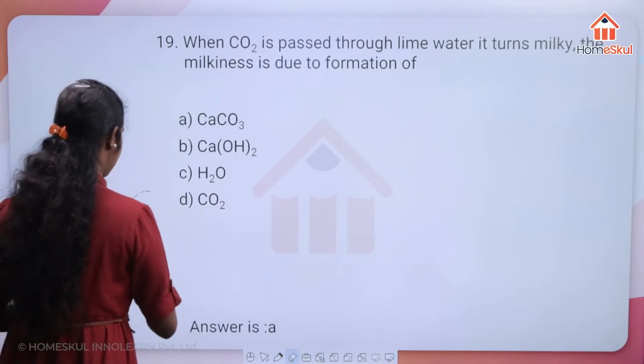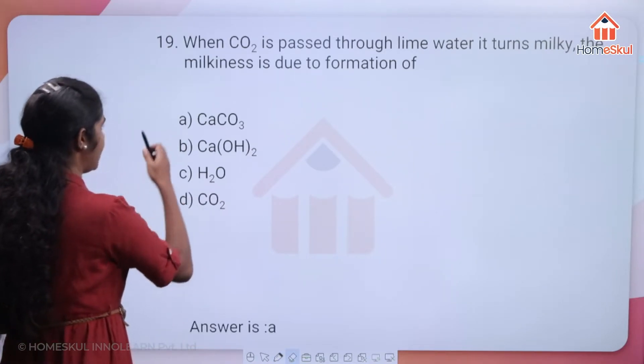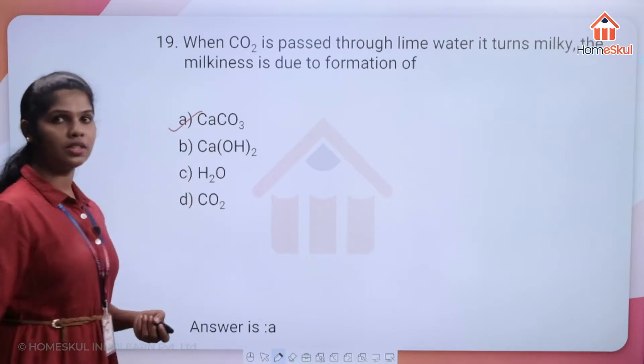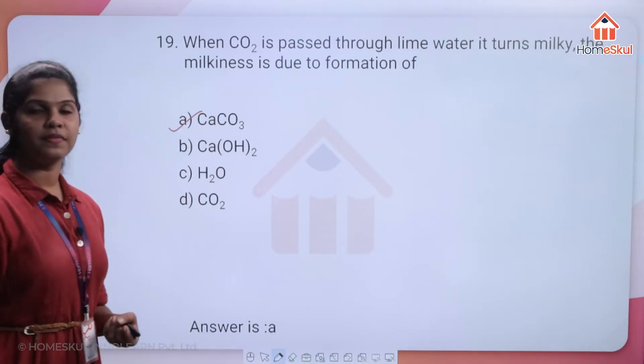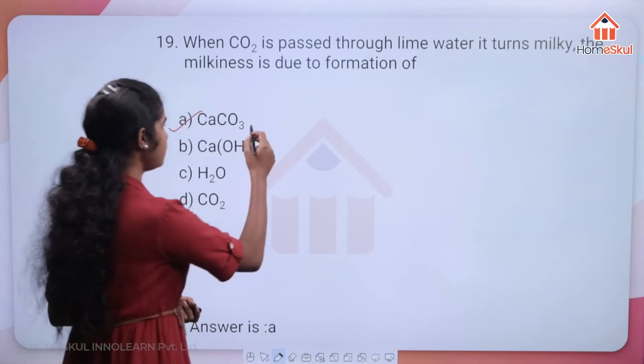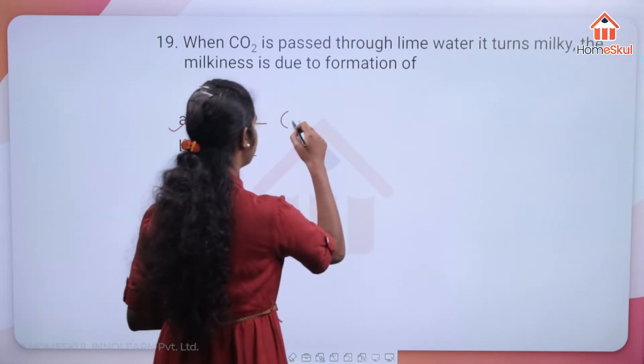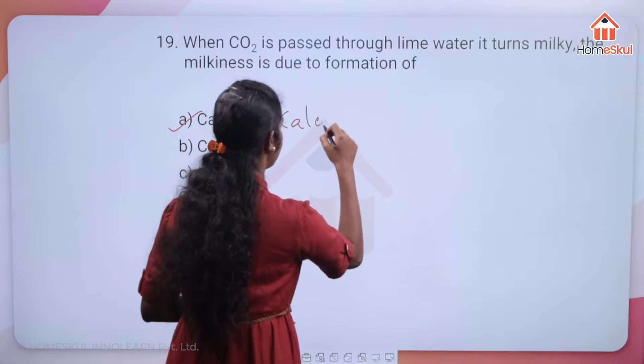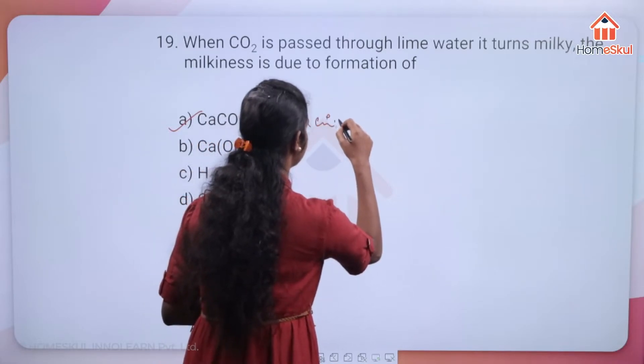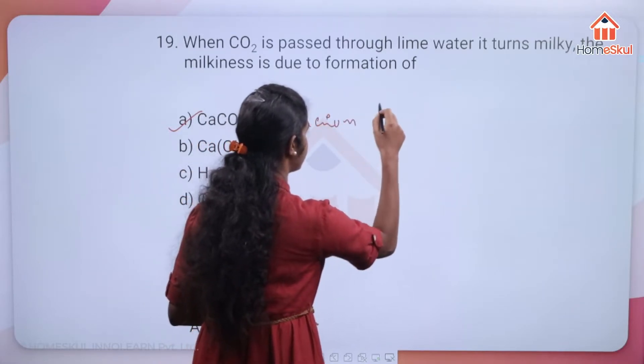The answer is option A — CaCO3 (calcium carbonate) is the compound responsible for the milkiness when CO2 is passed through lime water.